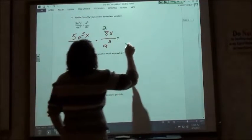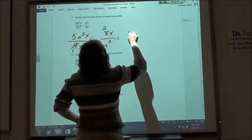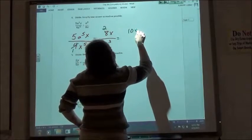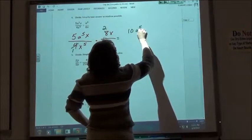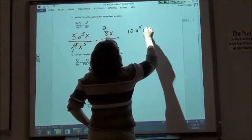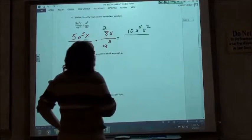Okay, so on the top we would have 10, a to the 5th x squared. On the bottom, 9.